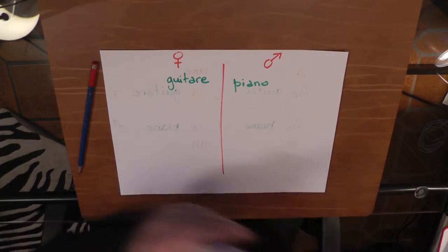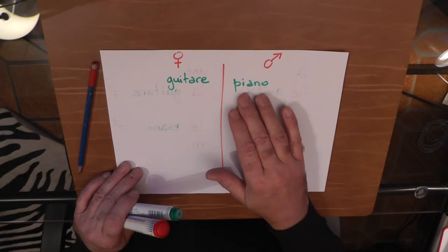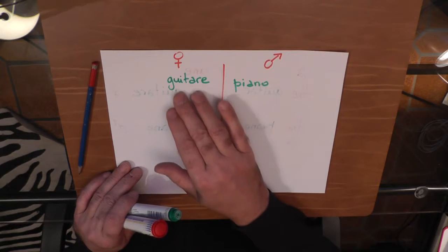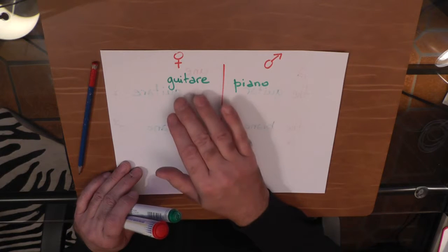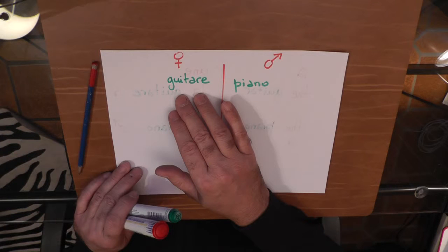I said piano is masculine, le piano, un piano. Guitar is feminine, une guitare, la guitare. Une guitare is for a guitar, la guitare is for the guitar.